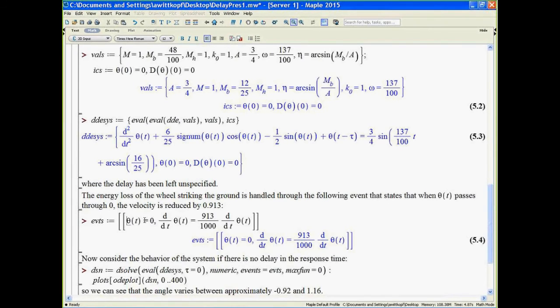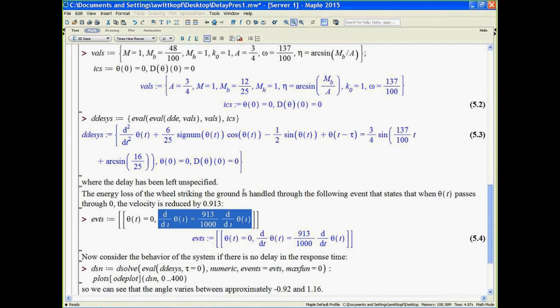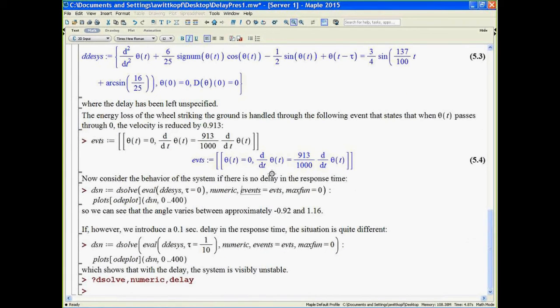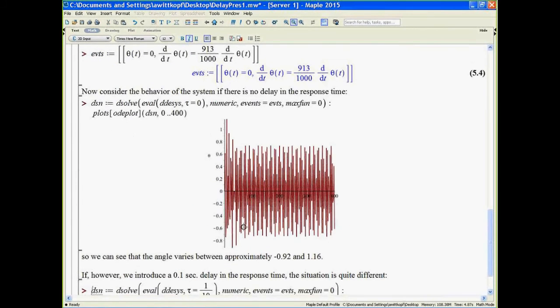This is the event description, and it says that as the angle passes through zero, the velocity is reduced by a factor of 913 over 1,000. The first thing we're going to look at is how the solution behaves when there's no delay in the response time. And this is what we get as a result integrating over 400 seconds. And we can see that the range of theta is pretty much between plus and minus 1. So the suitcase is tilting back and forth, but not overly much.